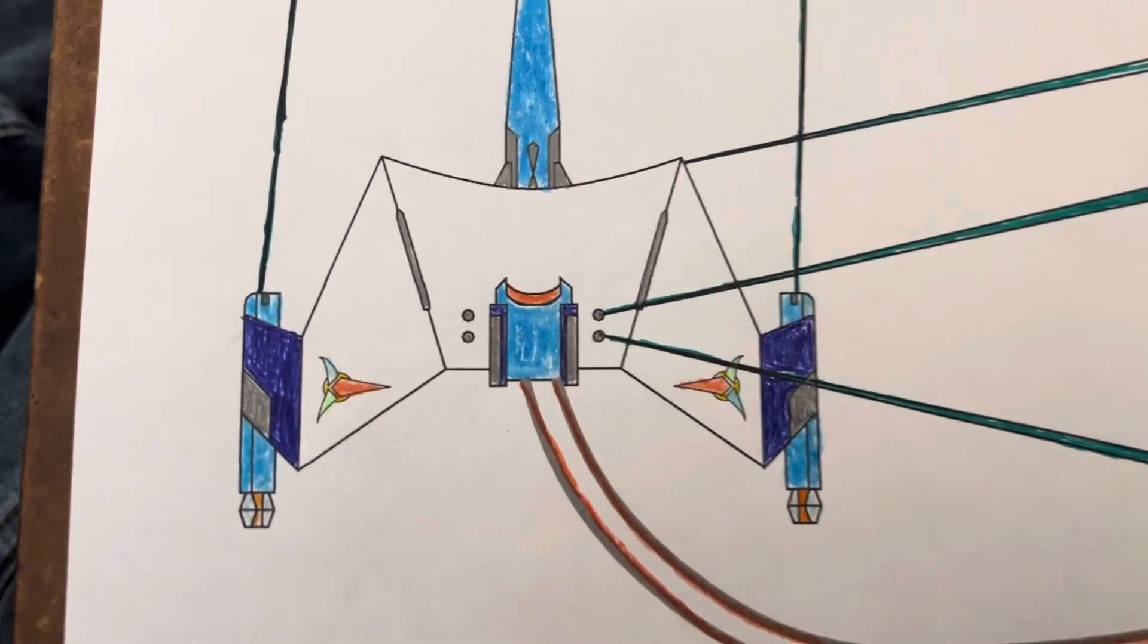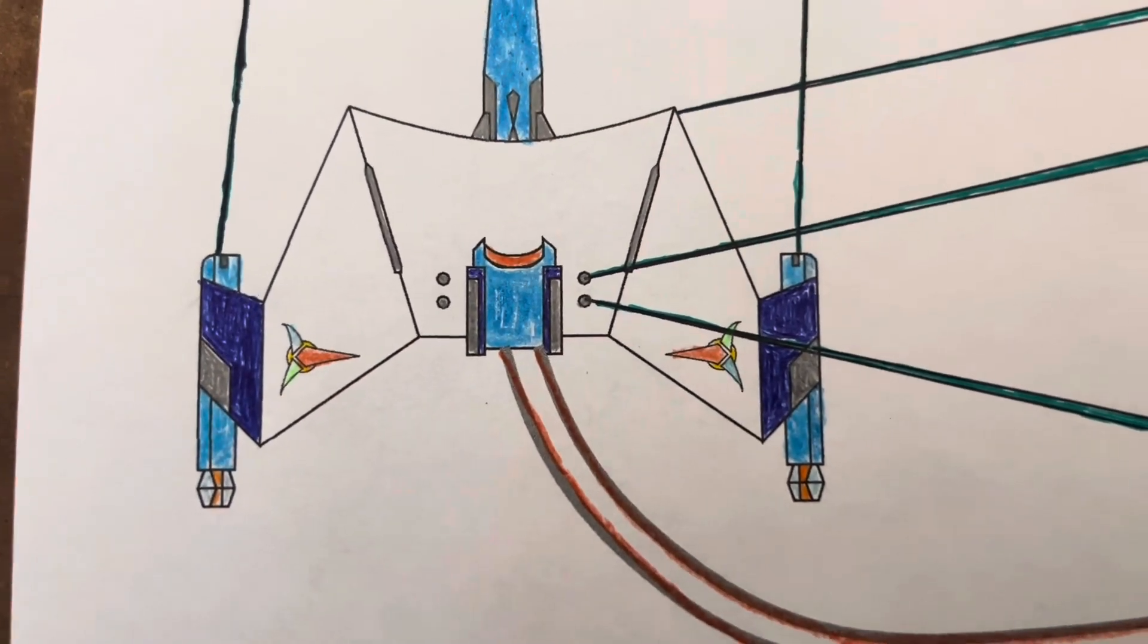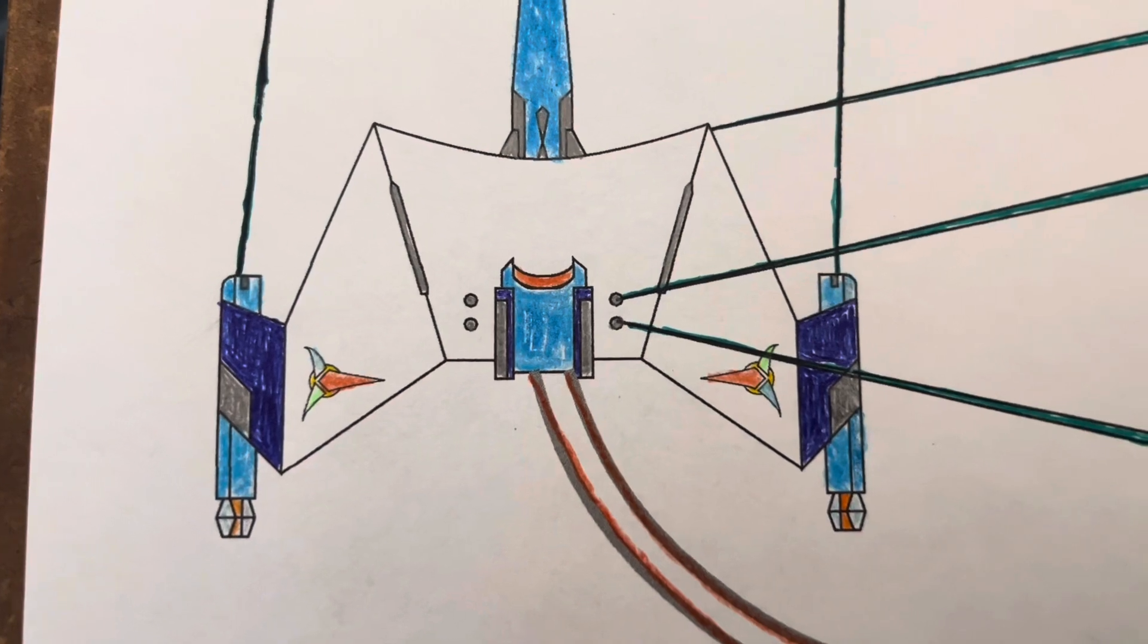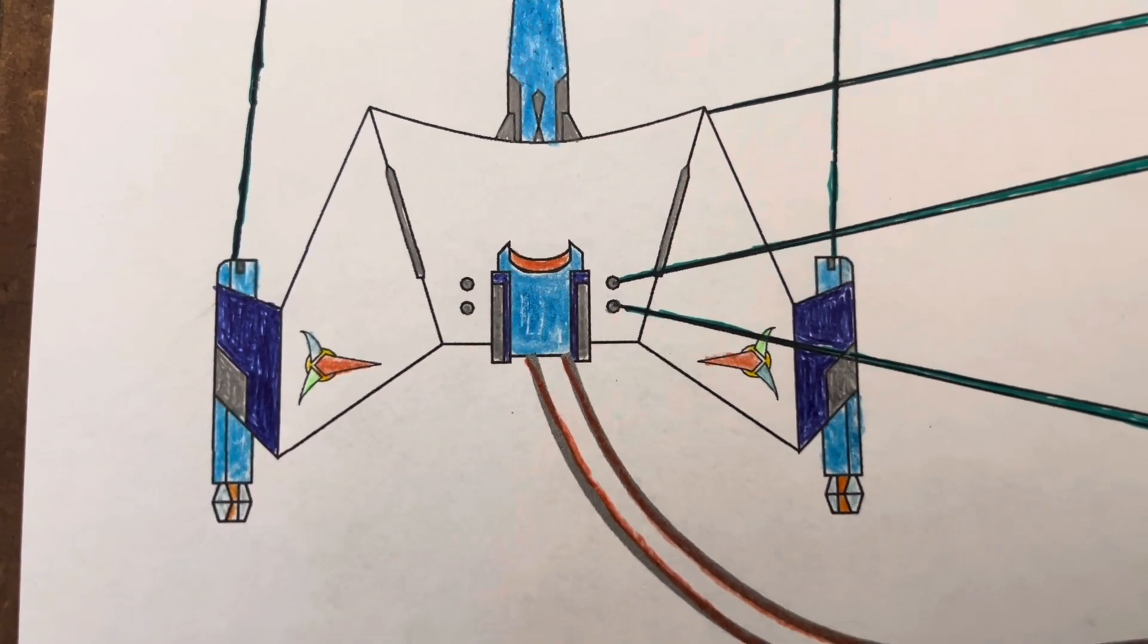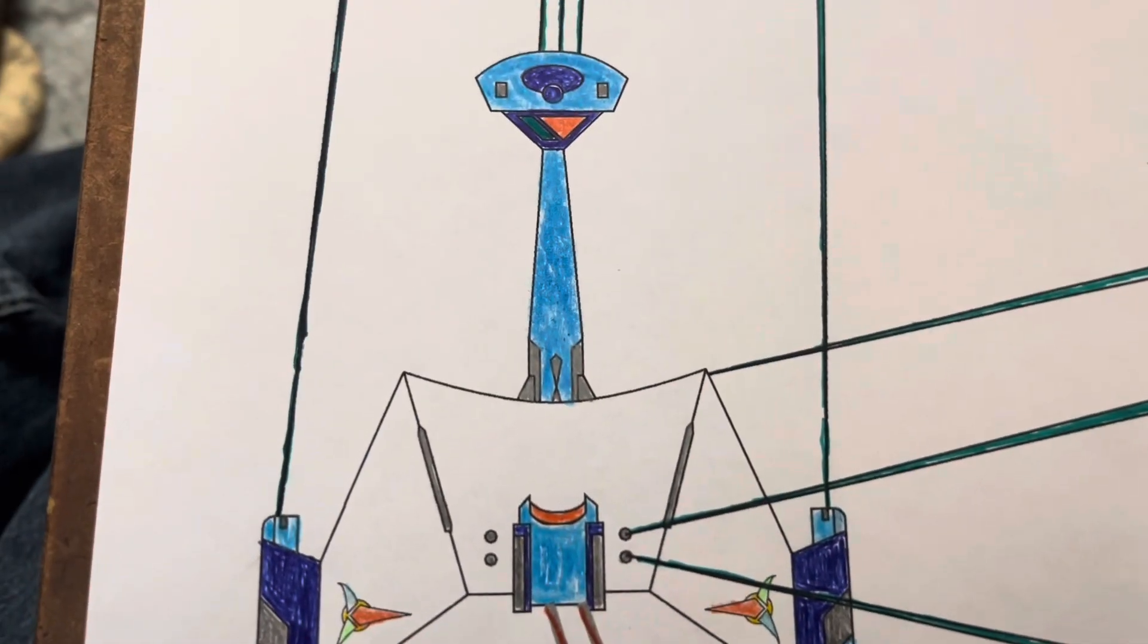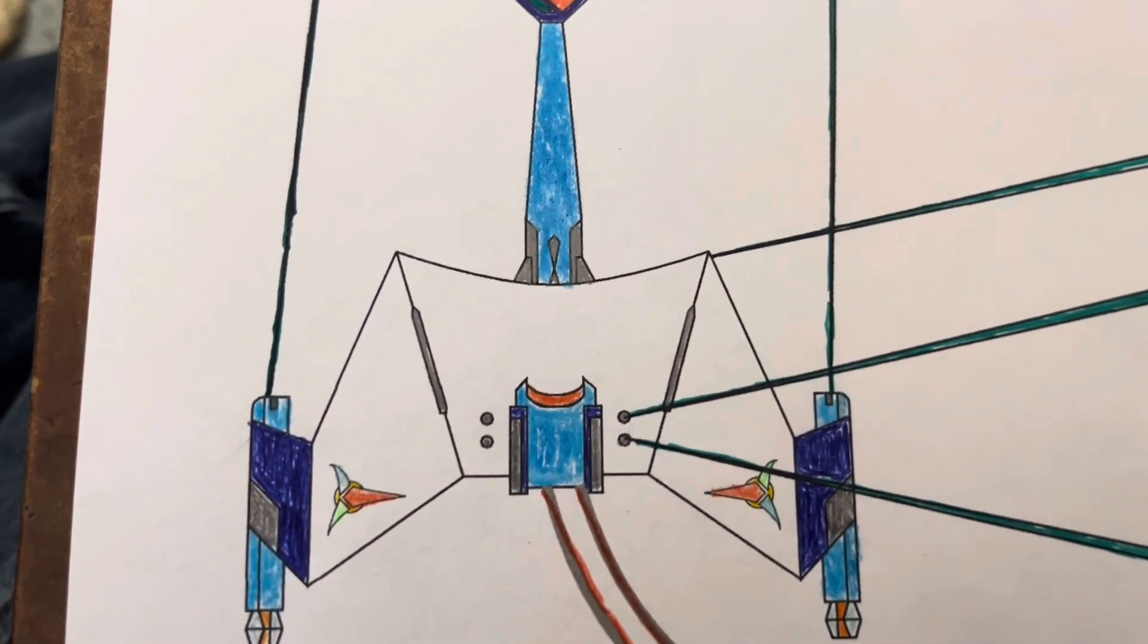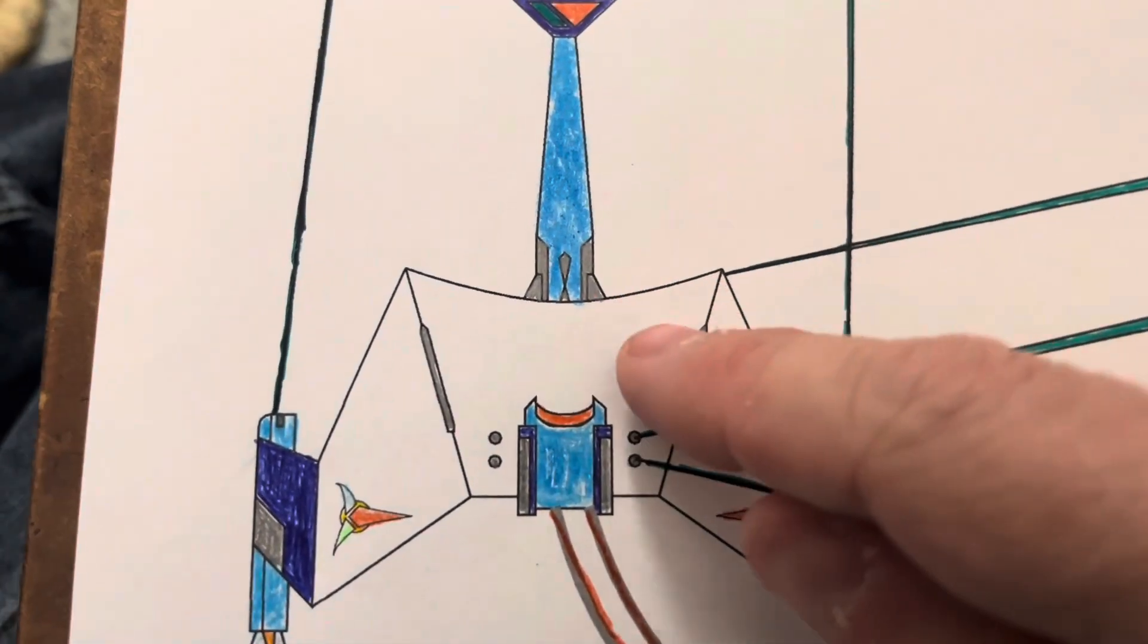Okay, now I have the warp pylons and the warp engines colored in, and next will be the secondary hull.